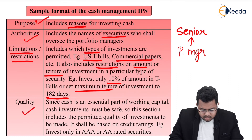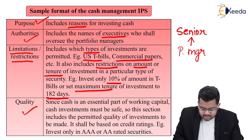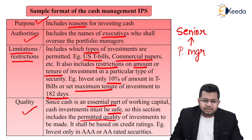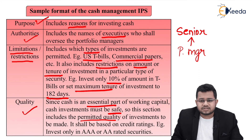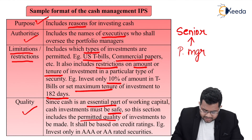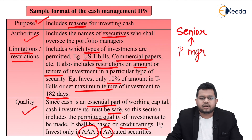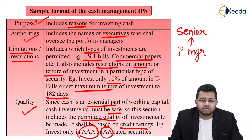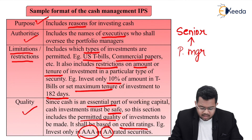You can also jot down the quality. Since cash is an essential part of working capital, cash investments must be safe. This section includes the permitted quality of investments to be made — meaning, which quality investments you have to do. Is it risky, risk-free, or something in between? It shall be based on credit ratings — for example, invest only in AAA or AA rated securities. These credit ratings will be studied in fixed income, but understand which quality investment is going to be made; that also you need to jot down. This is just a sample format — you can of course alter it as and when you need to.